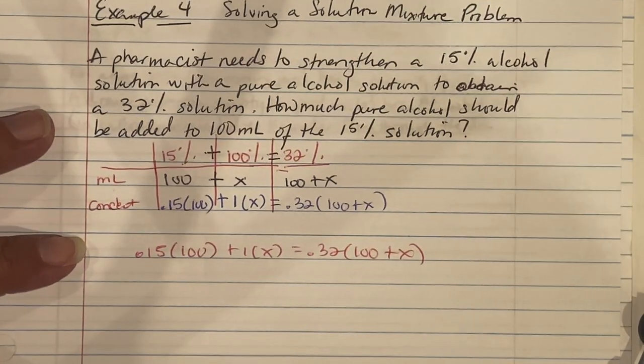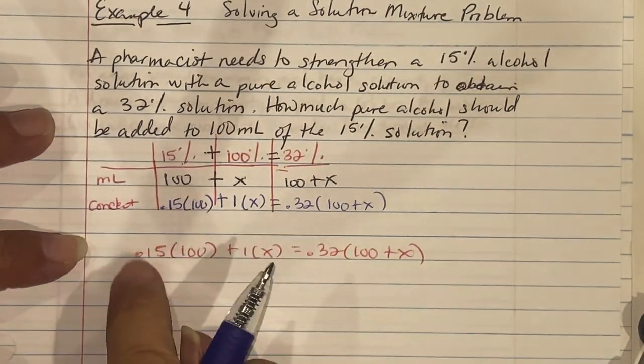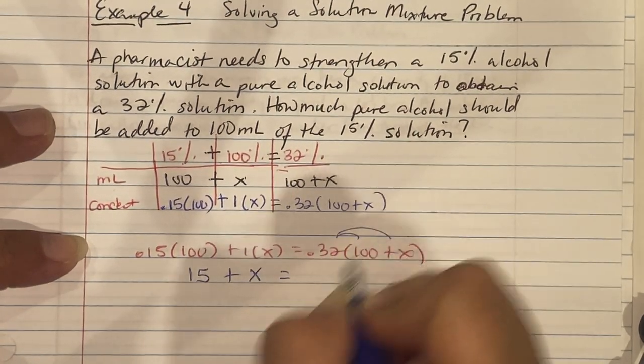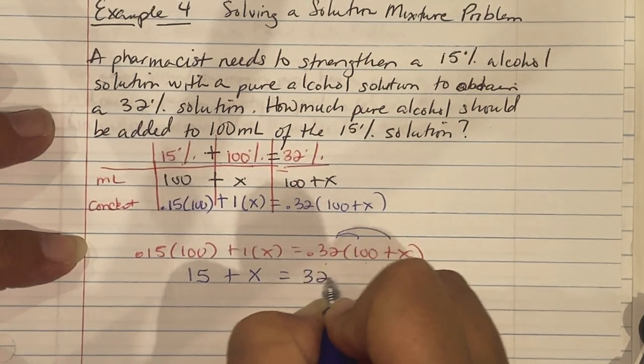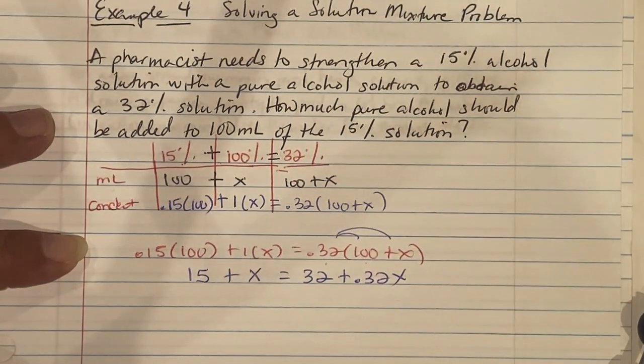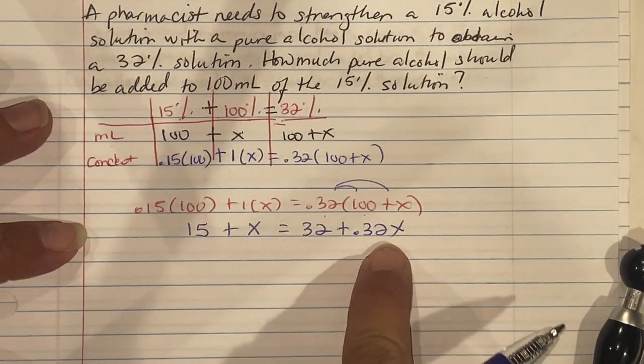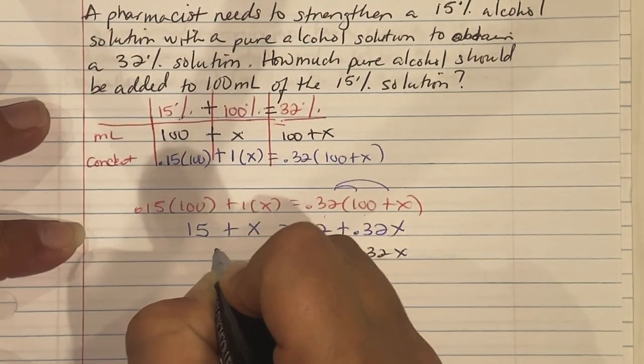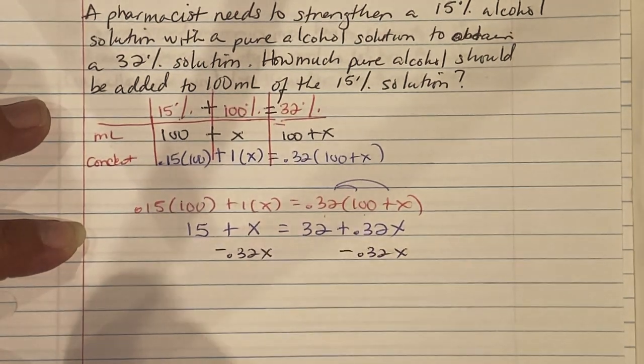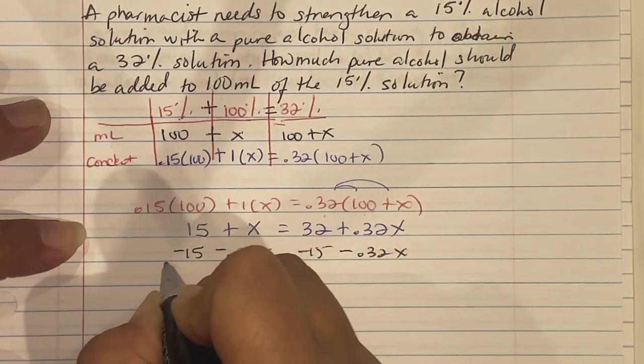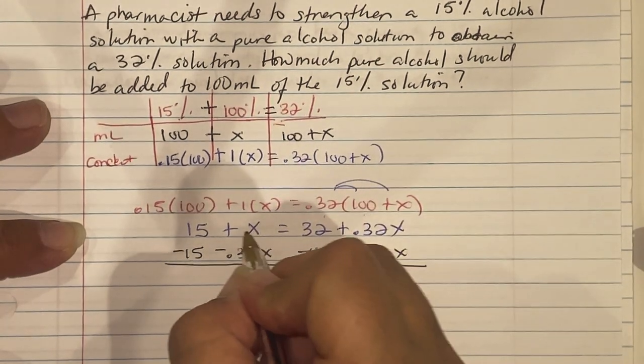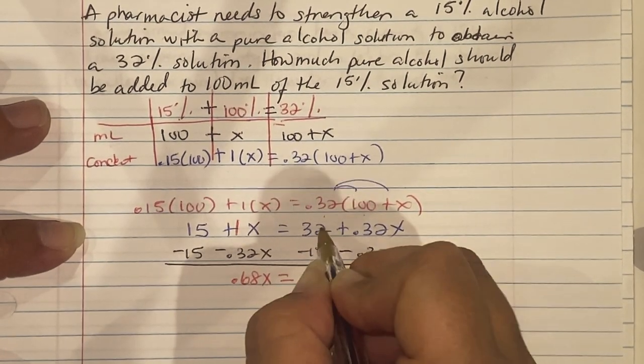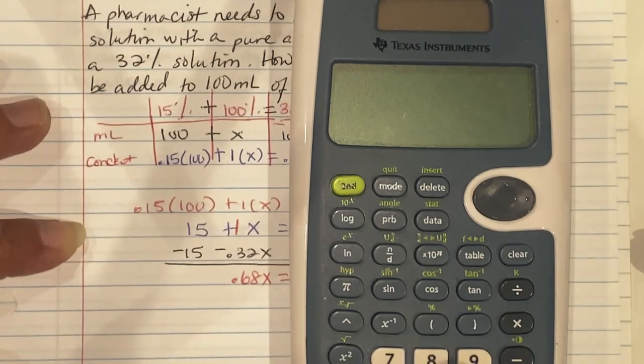So we're going to find out how much of the 100% we want. Using the distributive property, 0.15 times 100 is 15, 1 times X is X. Distributing 0.32 times 100 is 32 plus 0.32X. We're going to combine our X's. I'm going to move my X's to the left and numbers to the right. So I'm subtracting 0.32 and subtracting 15. So I get a dollar and I spent 32 cents, I'm left with 68 cents. 0.68X. I had 32 and spent 15, I'm at 17.